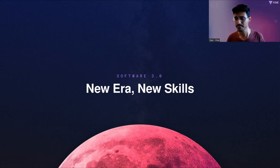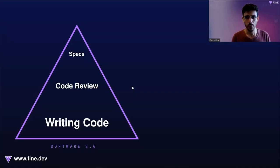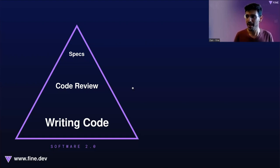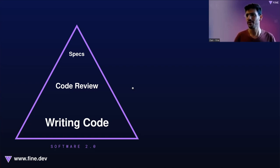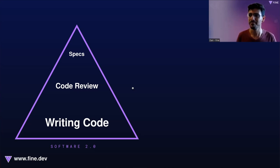So if the workflow is changing, it also requires a new set of skills. If we take a look at the old world — let's call it the Software 2.0 world — a significant part of our job was writing code. It was almost equivalent: being a coder was almost equivalent to being a software engineer, even though in my experience this wasn't necessarily true. Writing code was the significant part of building software.